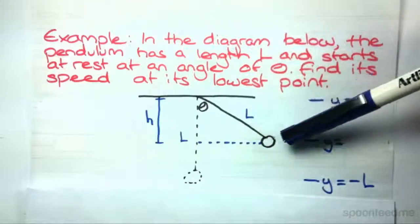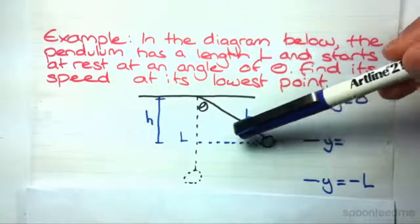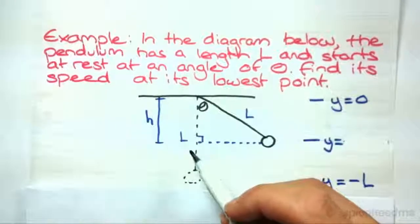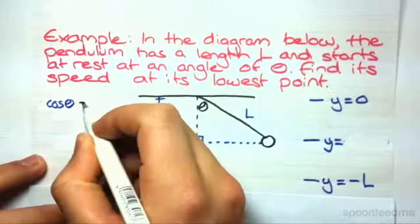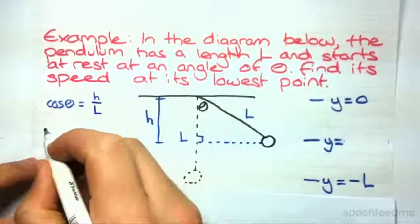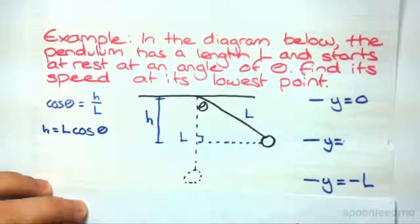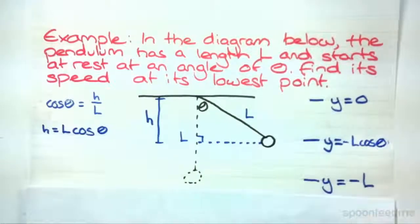And what I want to do is find the initial height below the top there. So what I'm going to do is look at this right angle triangle over here. And I'm going to look at cos theta. Now that's equal to H over L, which gives us that H is equal to L cos theta. So that's L cos theta below the roof, so that'll be minus L cos theta. We've defined downwards as negative.